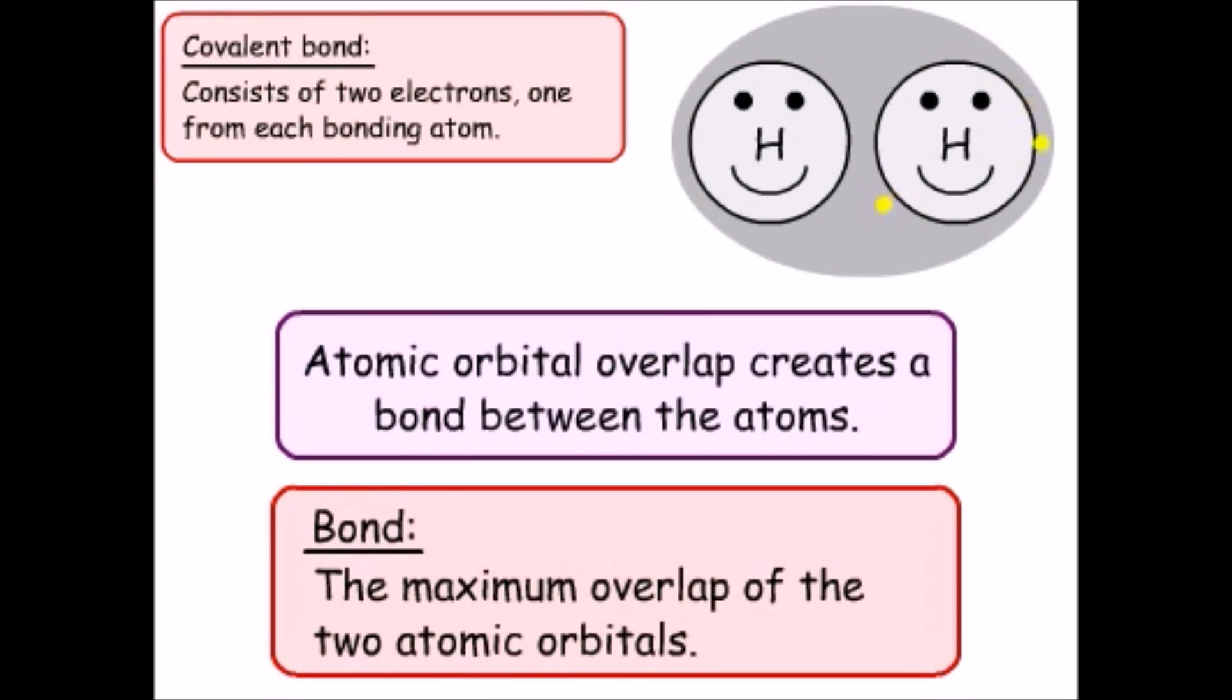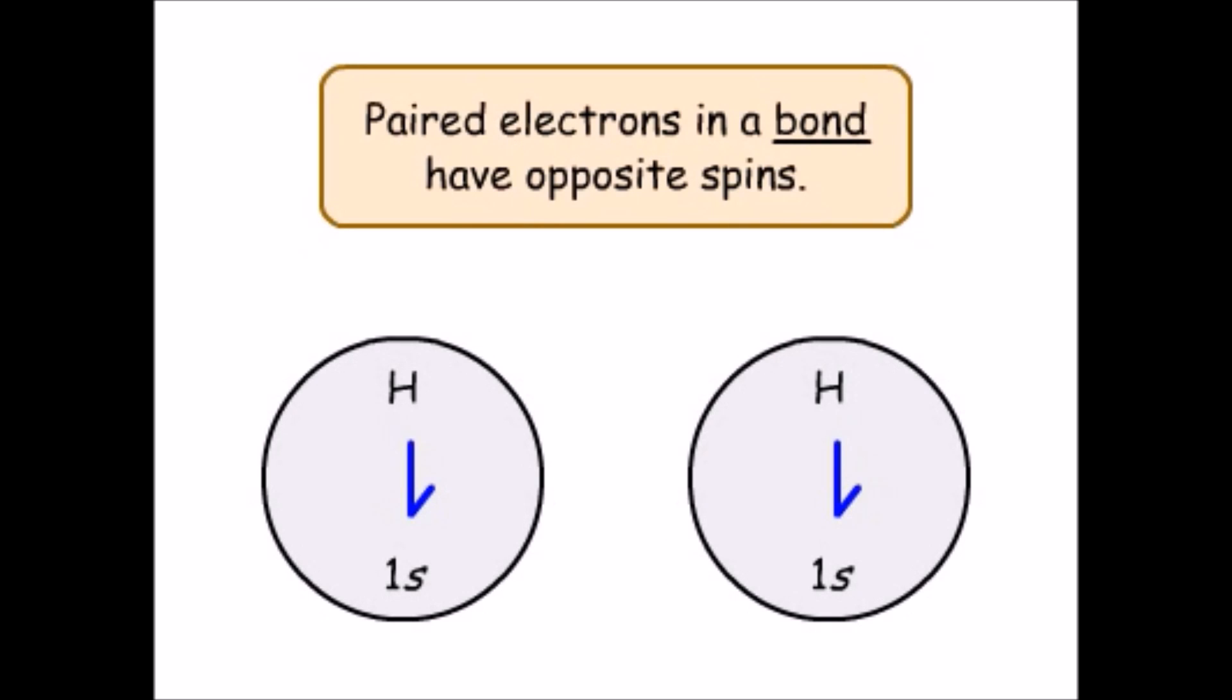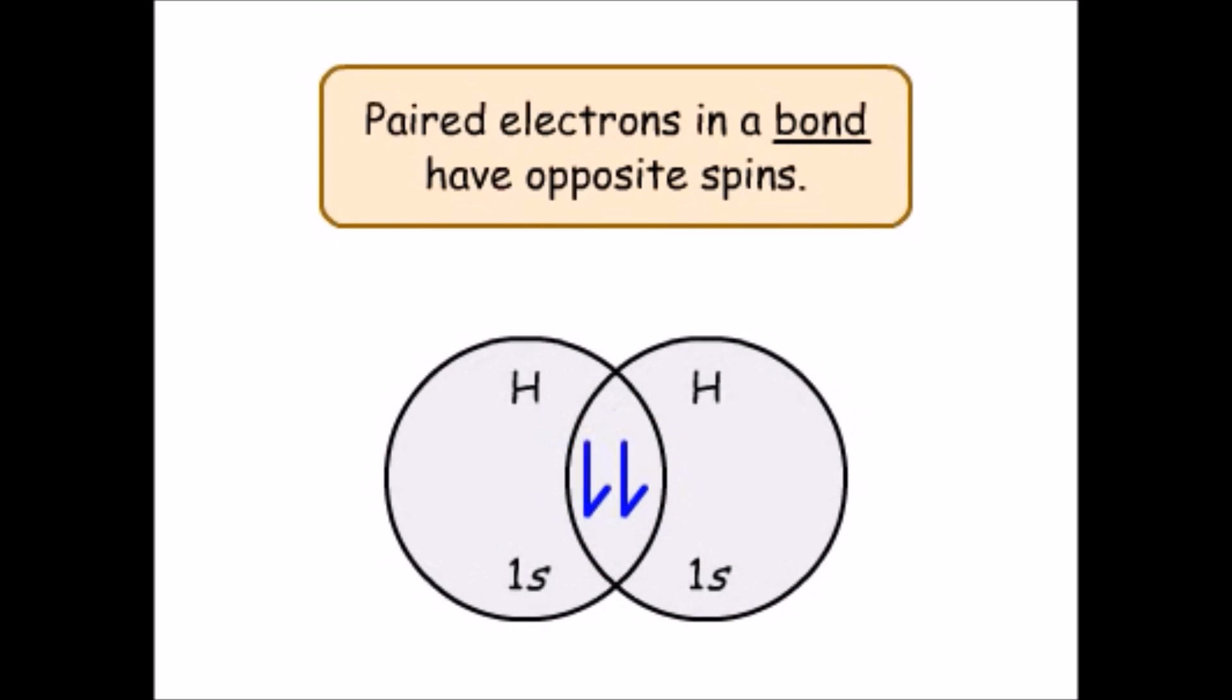A bond is the maximum overlap of two atomic or valence orbitals. The electrons in a bond have opposite spins.